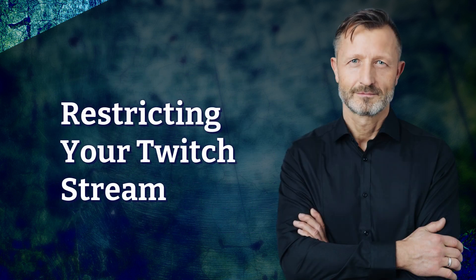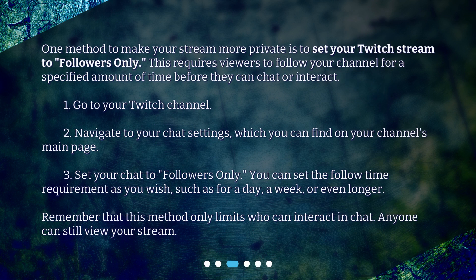Restricting your Twitch stream. One method to make your stream more private is to set your Twitch stream to followers only. This requires viewers to follow your channel for a specified amount of time before they can chat or interact. Step 1: Go to your Twitch channel. Step 2: Navigate to your chat settings, which you can find on your channel's main page.